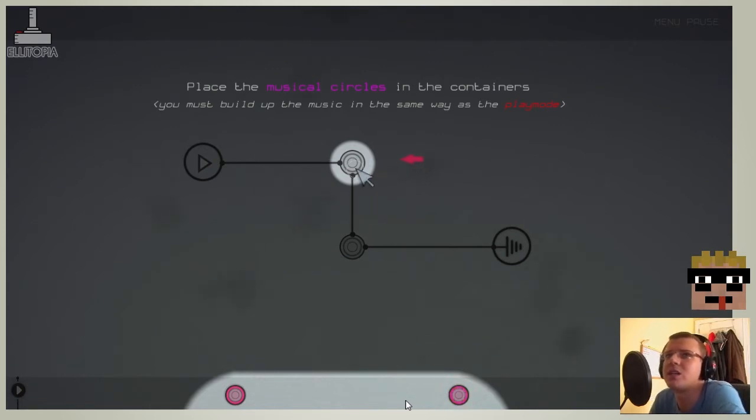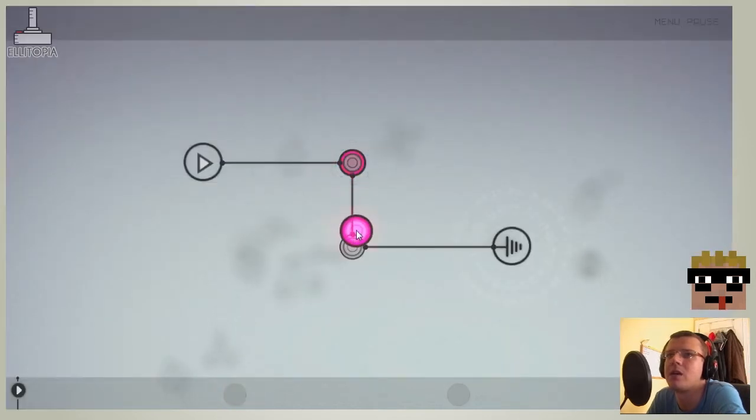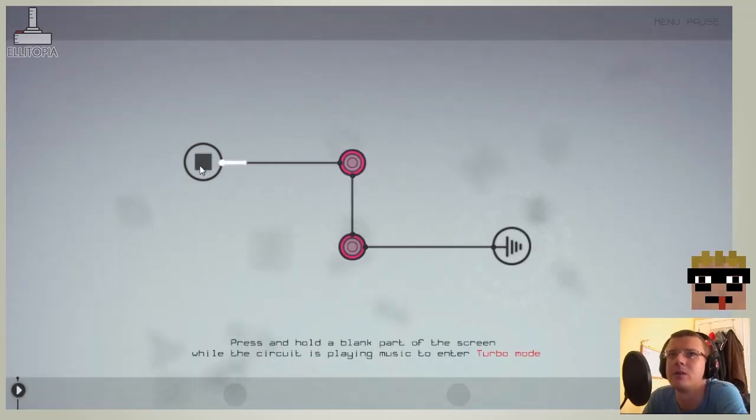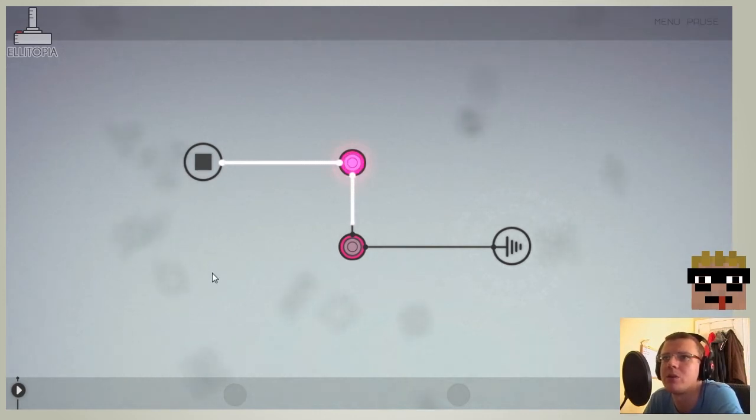Place the musical circles in the containers. You must build up the music in the same way as the play mode. So we drag that there and drag that there. Push play in the circuit to check if you have composed the music correctly. Press and hold a blank part of the screen while the circuit is playing to enter turbo mode. Right, okay.